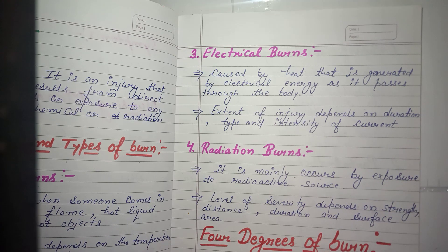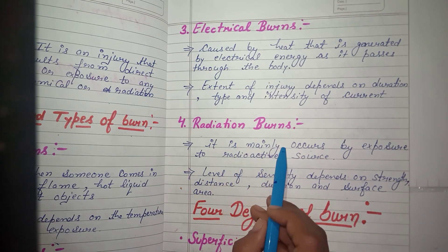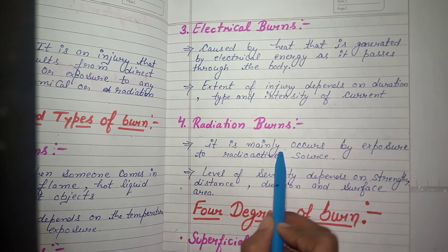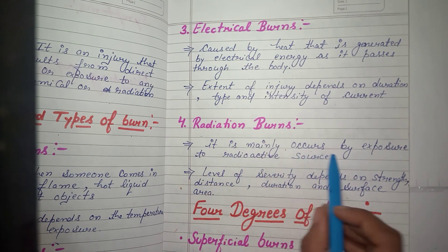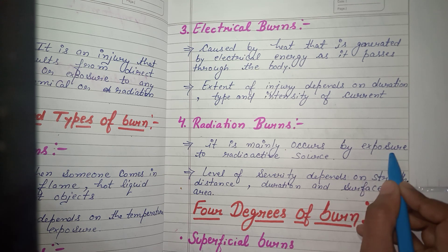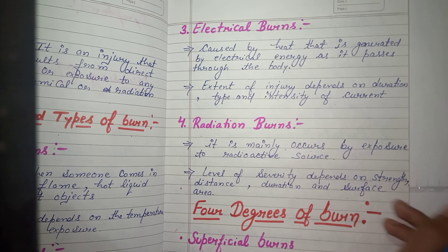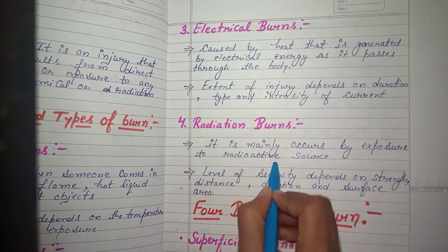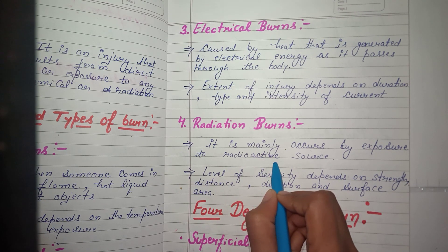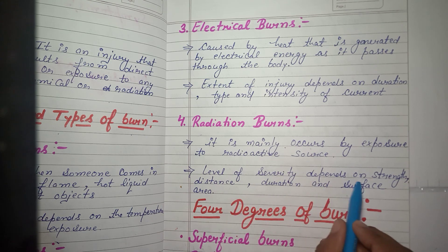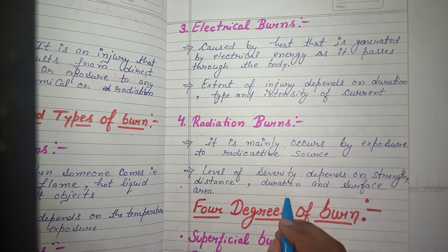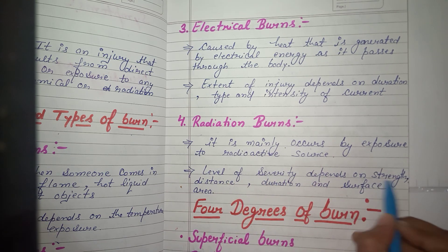Radiation burn mainly occurs by exposure to a radioactive source. When skin is exposed to a radioactive source or sun rays through long-term contact, radiation burn occurs. The level of severity depends on the strength of the radiation, the distance from the source, the duration of exposure, and the surface area of skin involved.